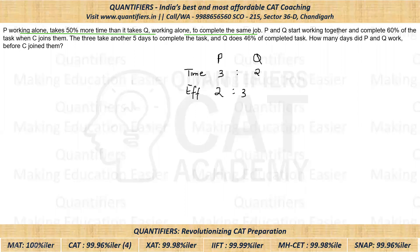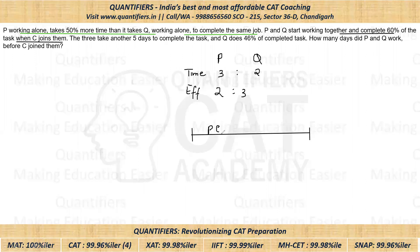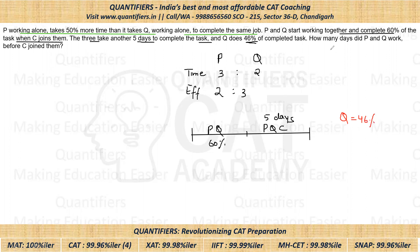It is given that P and Q start working together and complete 60% of the work when C joins them. So when P and Q had started, they did 60% of the work before C joined them. Then all three of them take another five days to complete the task. It is also given that Q did 46% of the complete work. We need to find how many days P and Q worked before C joined them.